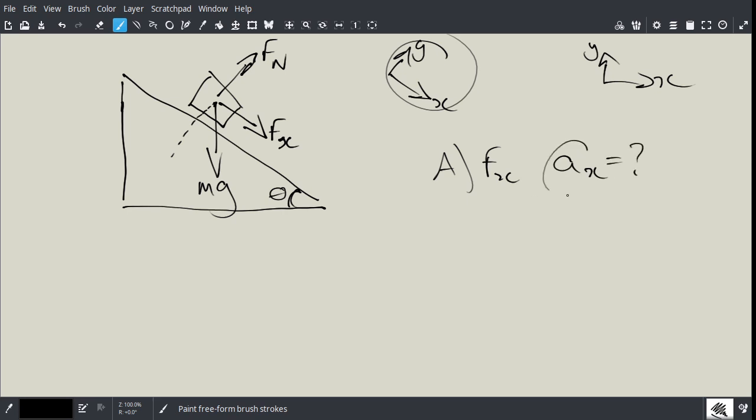But in order to find this, we need to find this because this is going to be this. So once we find this force, then we can simply divide by m and find the acceleration along the slope. Now remember, there's no friction in this case.